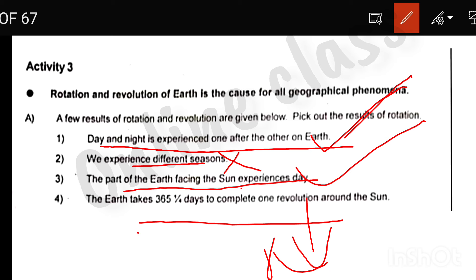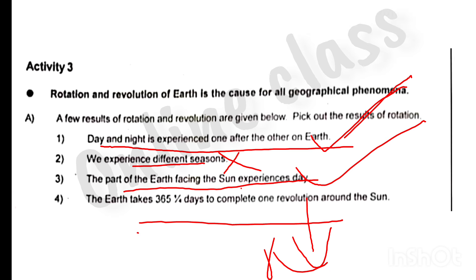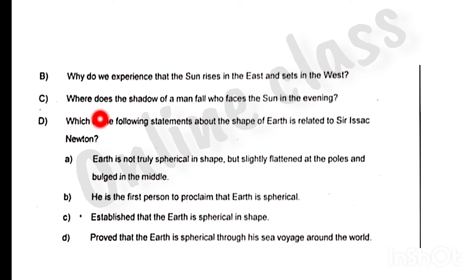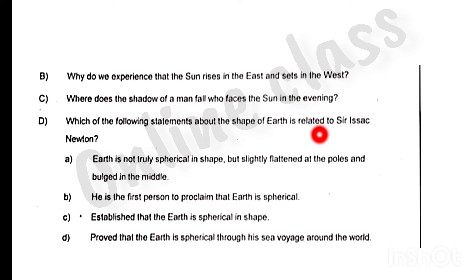The part of the earth facing the sun experiences day. Rotation is the result of rotation. Why do we experience that the sun rises in the east and sets in the west? That is the result of the earth facing day — that is related to Sir Isaac Newton.